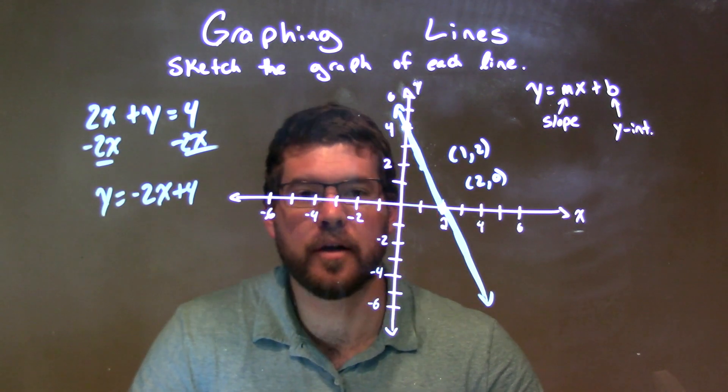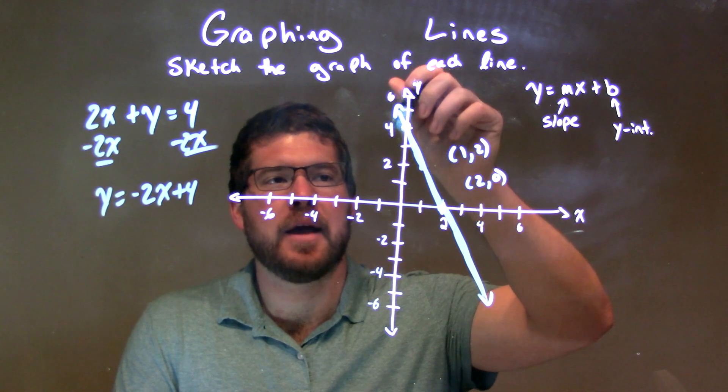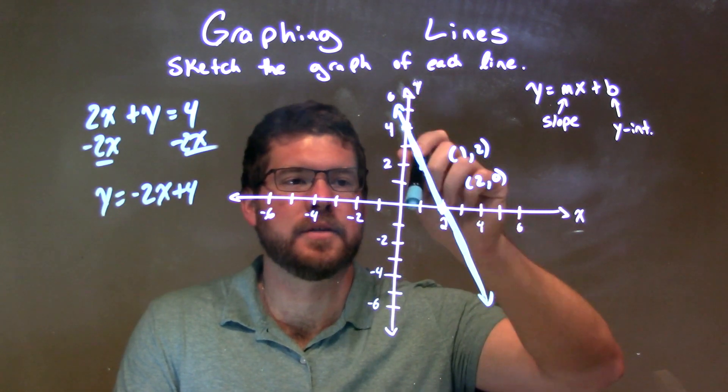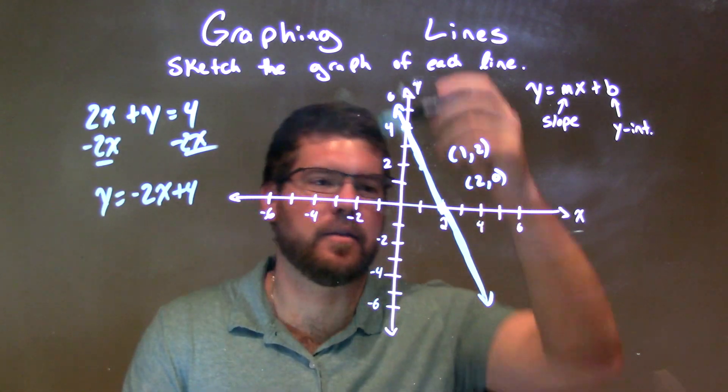And y equals negative 2x plus 4. Positive 4 is our y-intercept. Our slope is negative 2. So we go down 2 over 1, down 2 over 1. We've got plenty of points for our line. Connect the dots to make our line, and there we have it, our final answer.